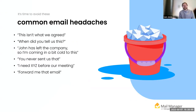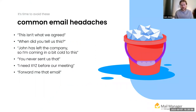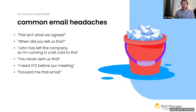Failing to manage your email means you don't know where your business-critical emails are, how they are stored, and you can't find the information you need when you need it. Without a clear email management process or tool in place, employees will manage their correspondence differently — some moving emails into Outlook folders, some saving to their individual desktops, and others simply deleting information. These are some of the common headaches we hear on a daily basis: 'This isn't what we agreed,' 'When did you tell us this?', 'John's left the company so I'm coming into this a bit cold,' or 'You never sent us that.'